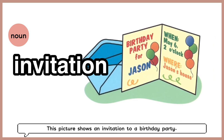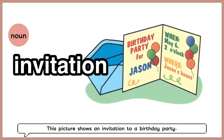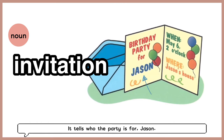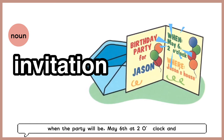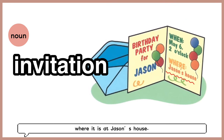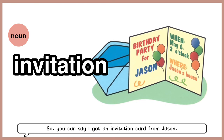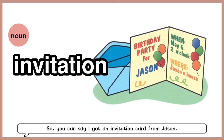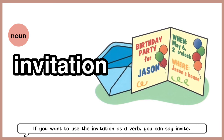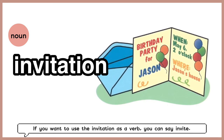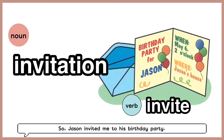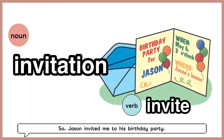This picture shows an invitation to a birthday party. It tells who the party is for — Jason — when the party will be, May 6th at 2 o'clock, and where it is, at Jason's house. So you can say, 'I got an invitation card from Jason.' If you want to use the word as a verb, you can say invite: Jason invited me to his birthday party.